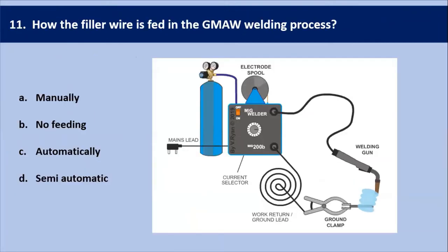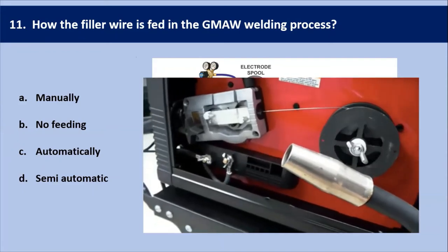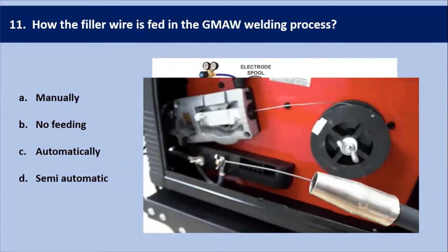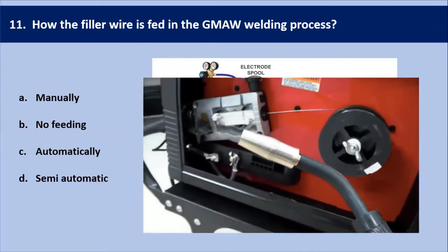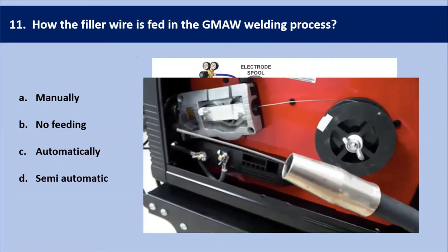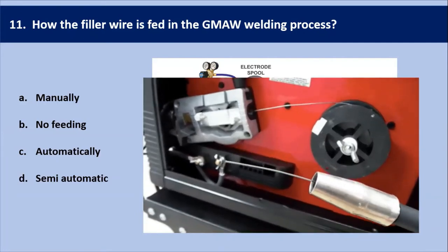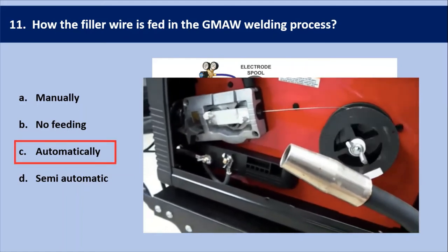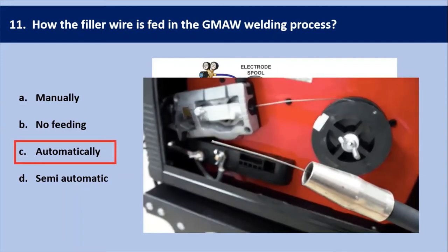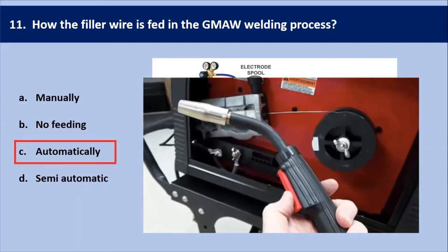Next question: how is the filler wire fed in GMAW welding process? The wire feed in GMAW — gas metallic arc welding — is done by a separate wire feeder machine. By simply pressing the button on the torch, the wire comes out automatically and is used as a consumable electrode during welding. This entire process is done automatically, so the answer is C.